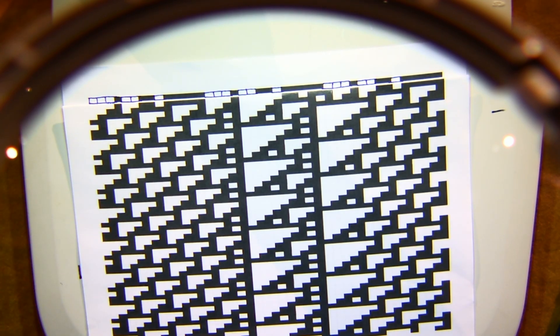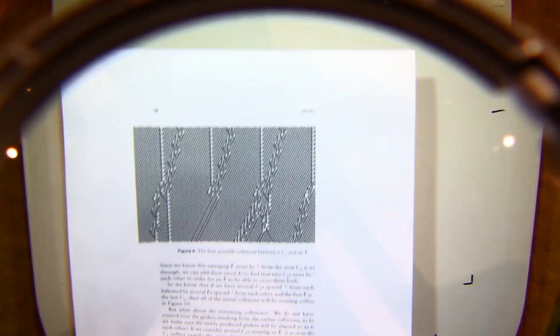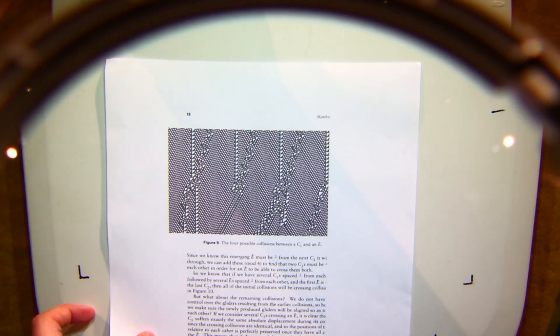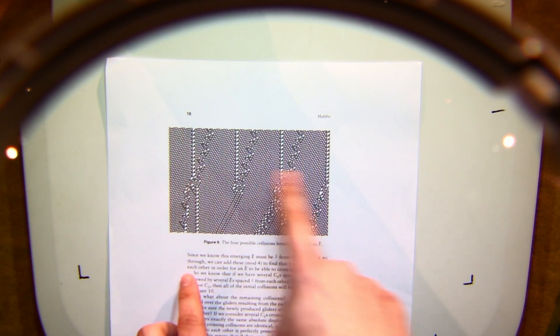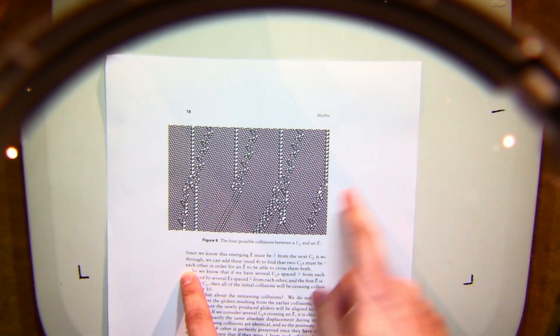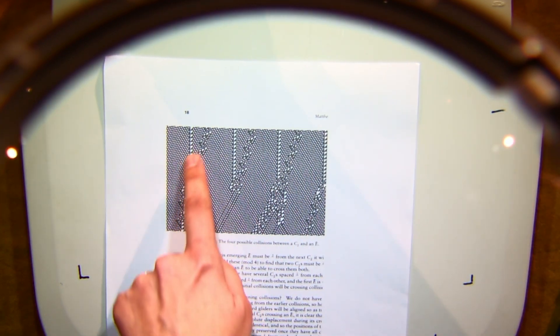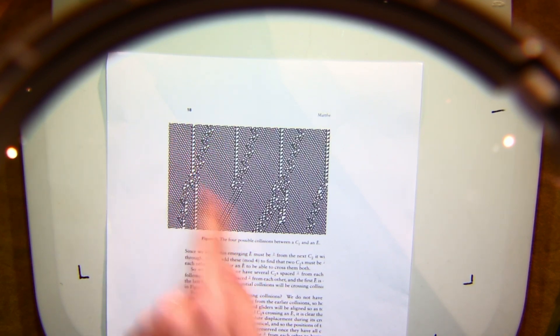And now you can compute with how these signals interact. So this is a sheet from the original paper that proved that this is Turing complete. This shows the four ways that one of these is cut off. I don't know why it's cut off in the original paper. This shows four ways that two signals can interact, this diagonal signal and this vertical signal. And these interactions are enough to model any kind of computation.